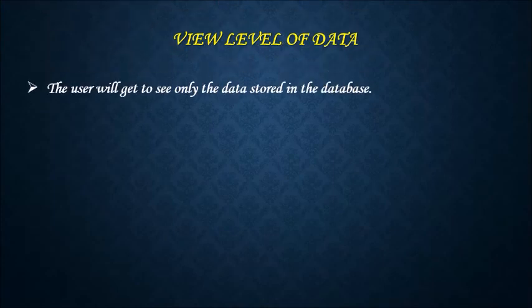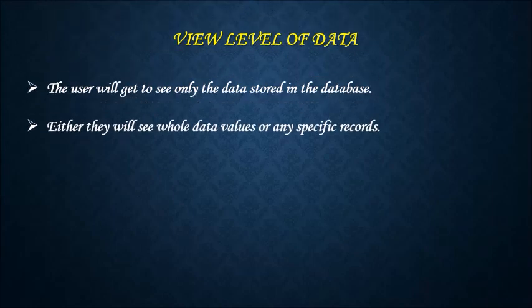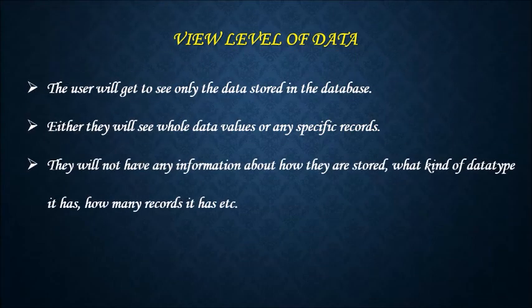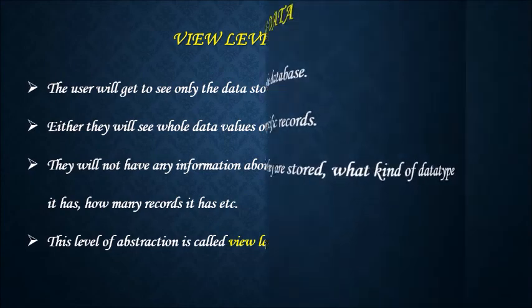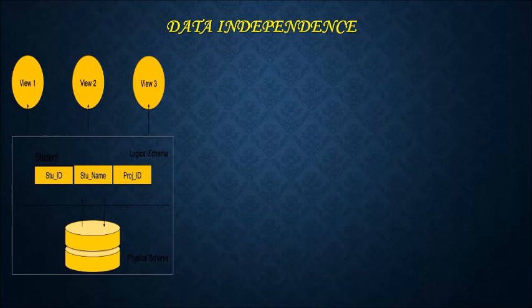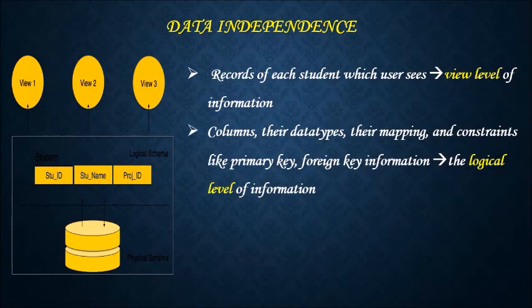The user will get to see only the data stored in the database. Either they will see whole data values or any specific records. They will not have any information about how they are stored, what kind of data type it has, how many records it has, etc. This level of abstraction is called view level. For example, in a student table, records of each student is the view level of information. Columns, their data types, their mapping and constraints like primary key, foreign key information are the logical level of information.